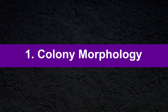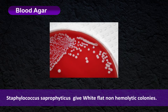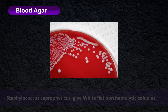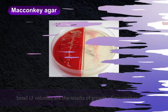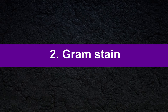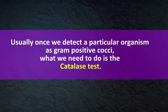Let's see how to detect Staphylococcus saprophyticus in the laboratory. First, it is important to look at the growth pattern and colony morphology to have an idea about culture growth. On blood agar, Staphylococcus saprophyticus gives wide, flat, non-haemolytic colonies. Small lactose-fermenting colonies are the result of growth on MacConkey agar.